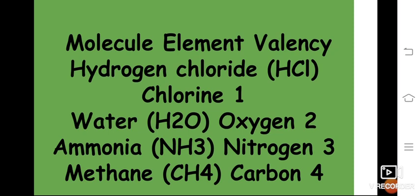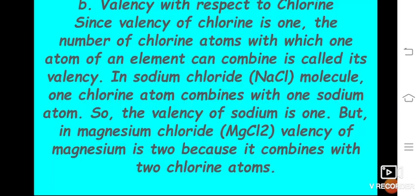Here we have some molecules with their valence. Hydrogen chloride — molecular formula HCl, valence is 1. Water — molecular formula H2O, oxygen valence is 2. Ammonia — formula NH3, nitrogen valence is 3. Methane — formula CH4, carbon valence is 4.